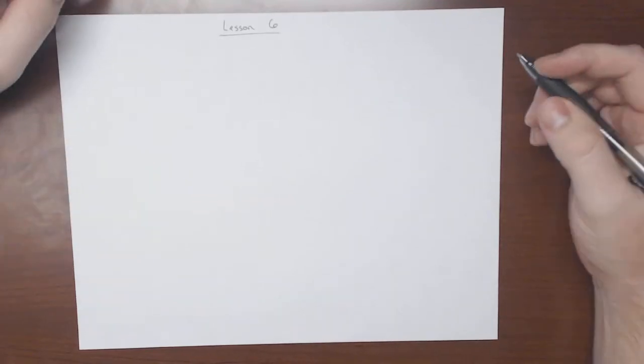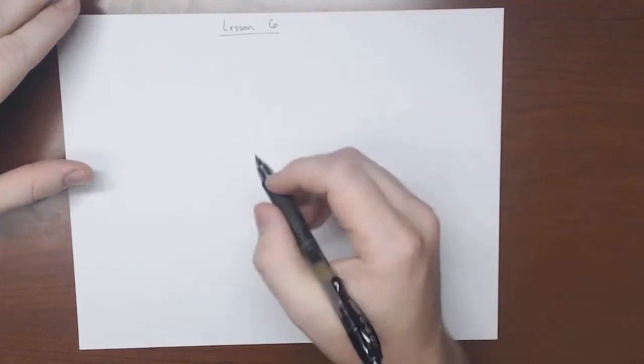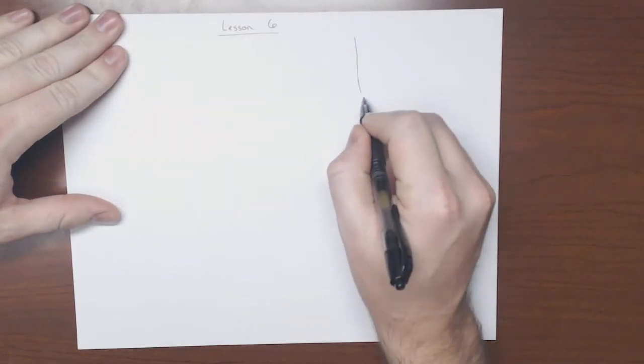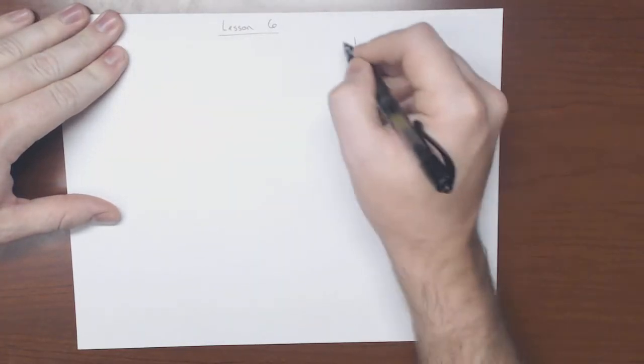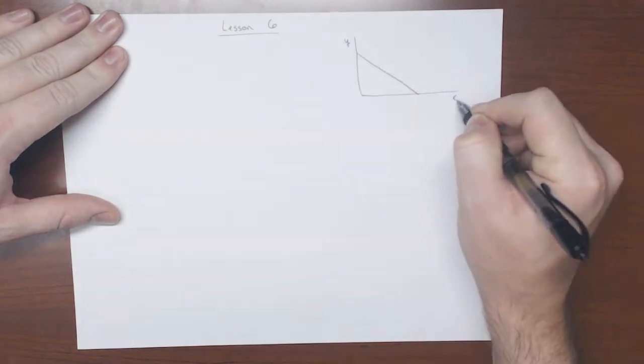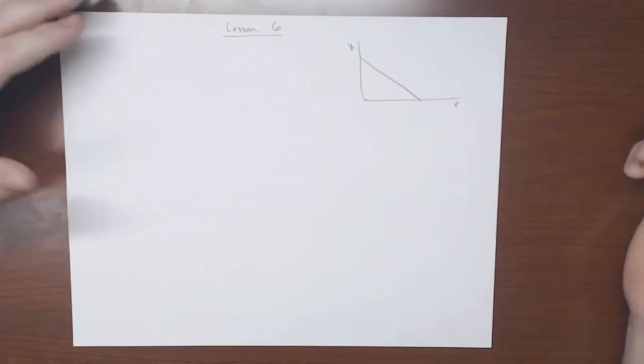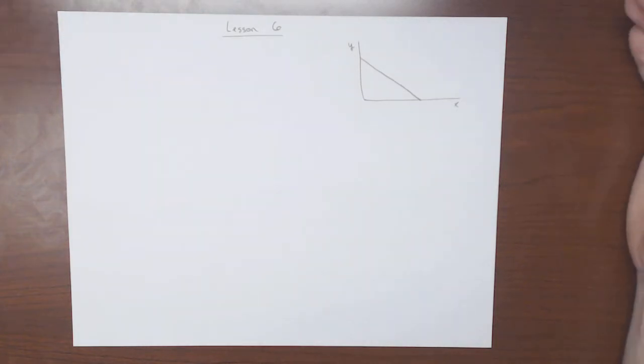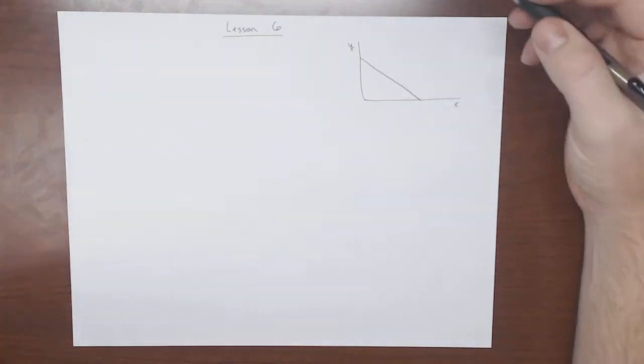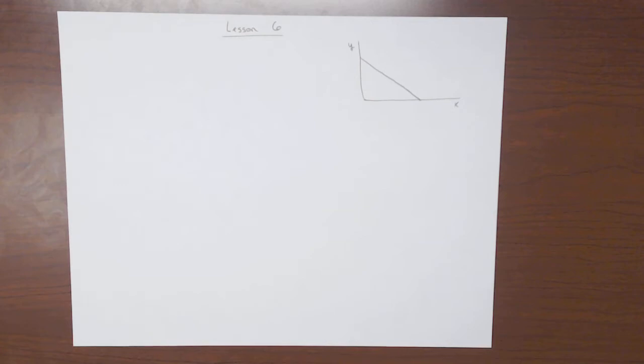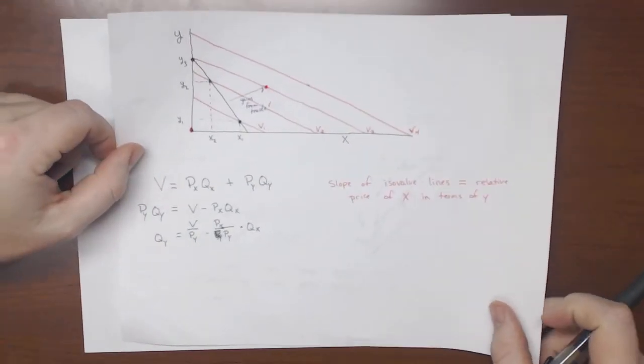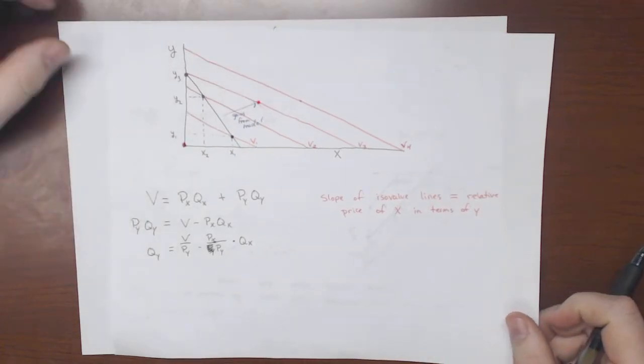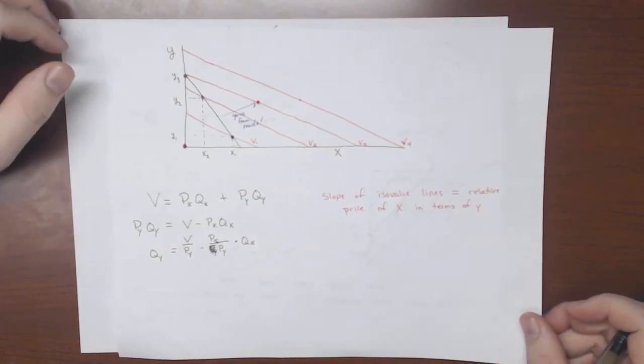So, up until now, we've been presuming that we had a straight line PPF curve between two goods, X and Y, and that these things had constant rates of return, constant rates of substitution, and everything seemed very simple. But what this says, and what we concluded in all these cases, was that each country should only produce one thing.